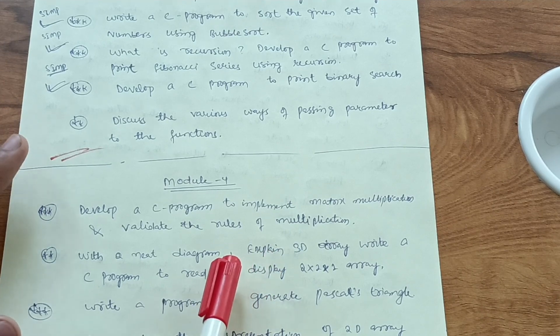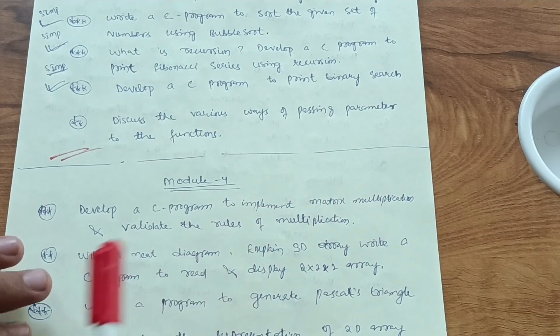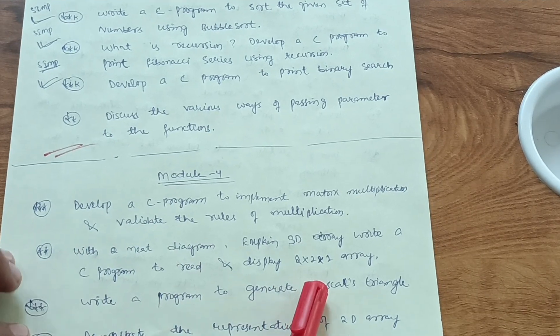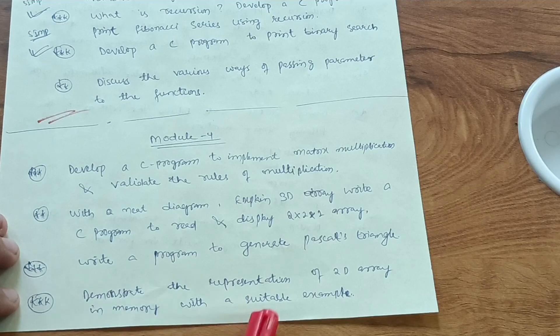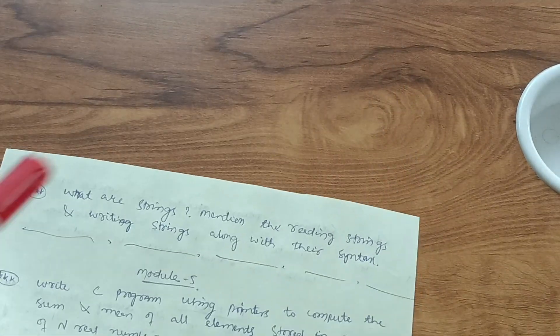Write a C program to read and display 2×2×2 array, that is 2 cross 2 cross 2 array. This is again an important one. Then write a program to generate Pascal's triangle. Demonstrate the representation of 2D array in memory with a suitable example.